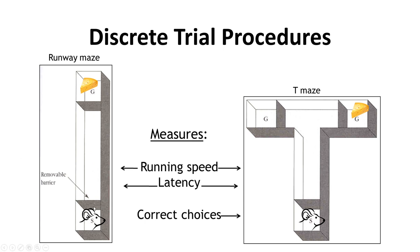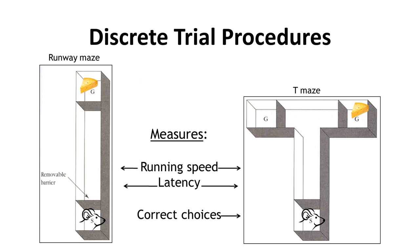By designing apparatuses that cater to that preference and give them an environment more similar to what they're used to, we can get more reliable results and control for potential confounds. When we have these different kinds of mazes, the usual idea is that they get from the start point to the goal — one location in a runway maze, left or right in a T-maze, multiple arms in a radial arm maze. There are a couple of different measures we can use: the first is running speed — how long does it take the rodent to go from start to goal?